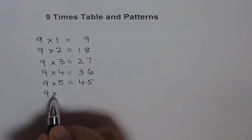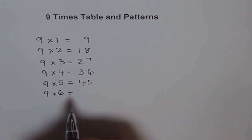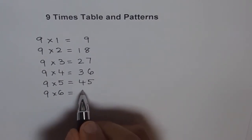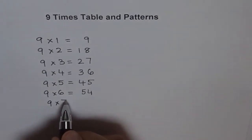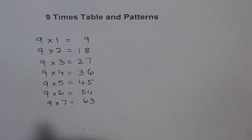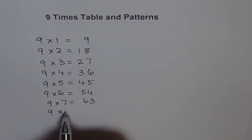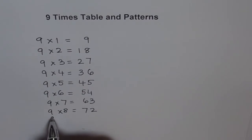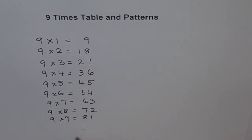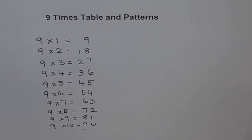9 times 6 is 54. 9 times 7 is 63. 9 times 8 is 72. 9 times 9 is 81. And 9 times 10 is 90. So that's our times table for 9.